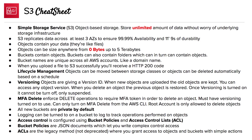Then you have versioning, which allows you to have version IDs on your objects. When you upload a new object on top of an existing object, the old object will still remain, and you can access any previous object based on its version ID. When you delete an object, the previous object will be restored. Once you turn on versioning, it cannot be turned off — it can only be suspended.